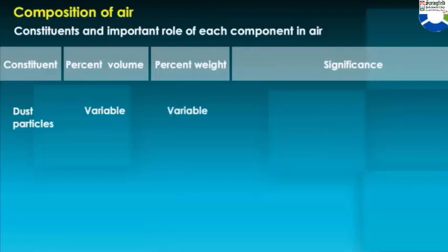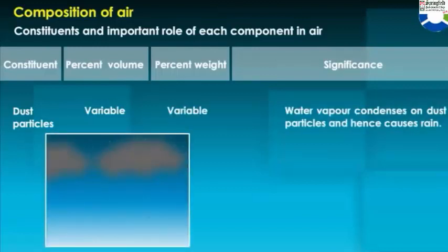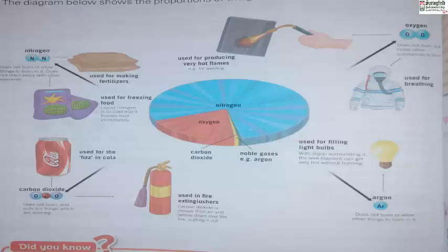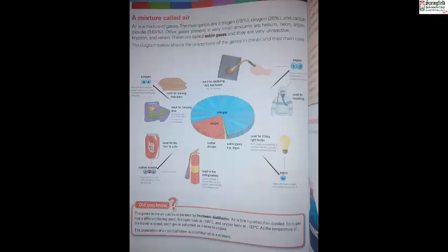Dust particles: percent volume variable, percent weight variable. Significance: water vapor condenses on dust particles and hence causes rain. Carbon dioxide is used as a pressurized gas in fire extinguishers and in fizzy drinks; argon is used to fill light bulbs; and we use oxygen to breathe. All of these gases can be separated by fractional distillation.